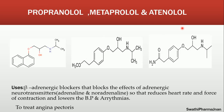Beta blockers are the second class of drugs used in the treatment of angina pectoris. Examples under beta blockers are propranolol, metoprolol, and atenolol. Propranolol structure contains a naphthalene ring as the basic nucleus. Pro indicates propanol group — CH2, CHOH, CH2 — and also an isopropyl group. The propanol group and isopropyl group are attached with a bridge that is an amino group, and the entire side chain is attached to the naphthalene ring with one oxygen linkage. That is the structure of propranolol.